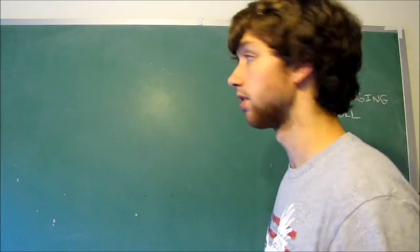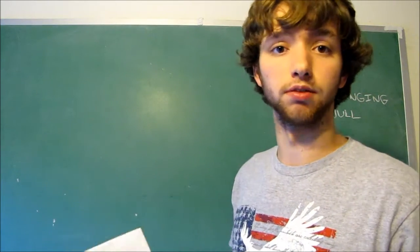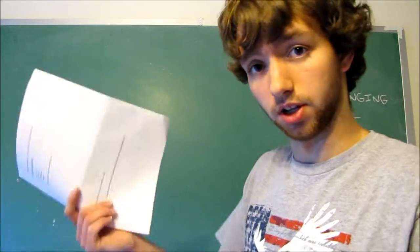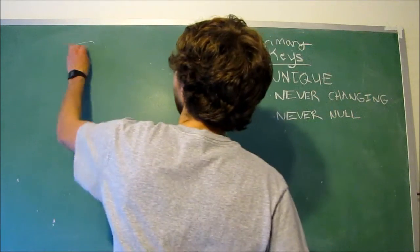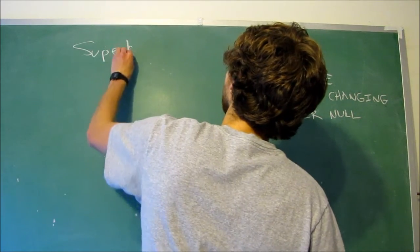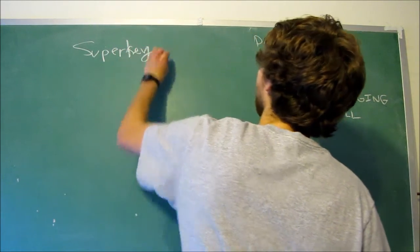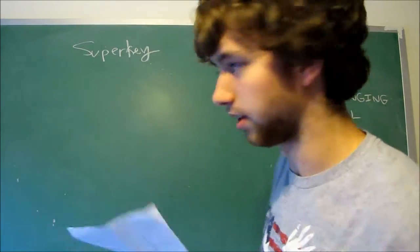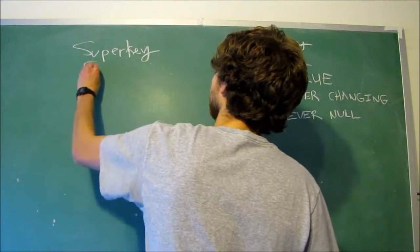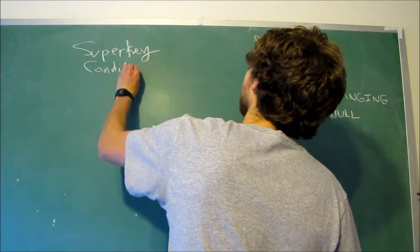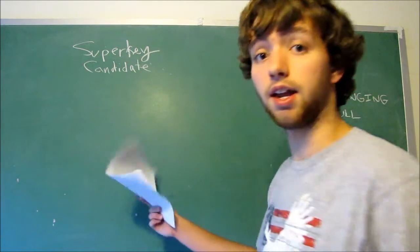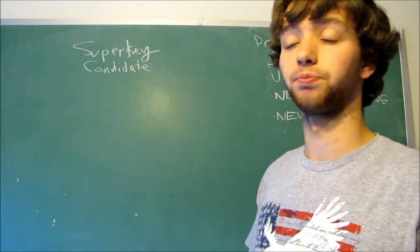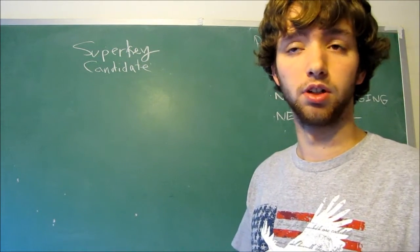First thing we started with was superkeys. So a superkey was just any number of columns that make and ensure uniqueness within a table. So we have superkey, which I still don't know why that's only one word, which just confuses the heck out of me. Then we had a candidate key. Now the difference between a superkey and a candidate key is that a candidate key is the least number of columns used to enforce uniqueness.